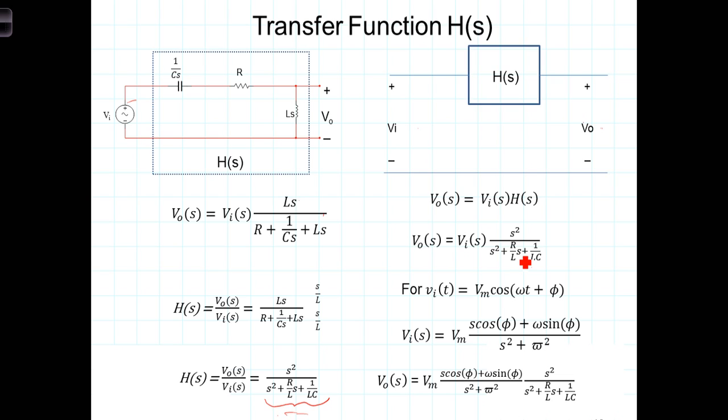Let's now specify V in. In fact let's say that the V in of time is equal to this cosine term here. From the Laplace transform tables we know that the Laplace representation of this time domain signal is V sub m S cosine of phi plus omega sine of phi over S squared plus omega squared.